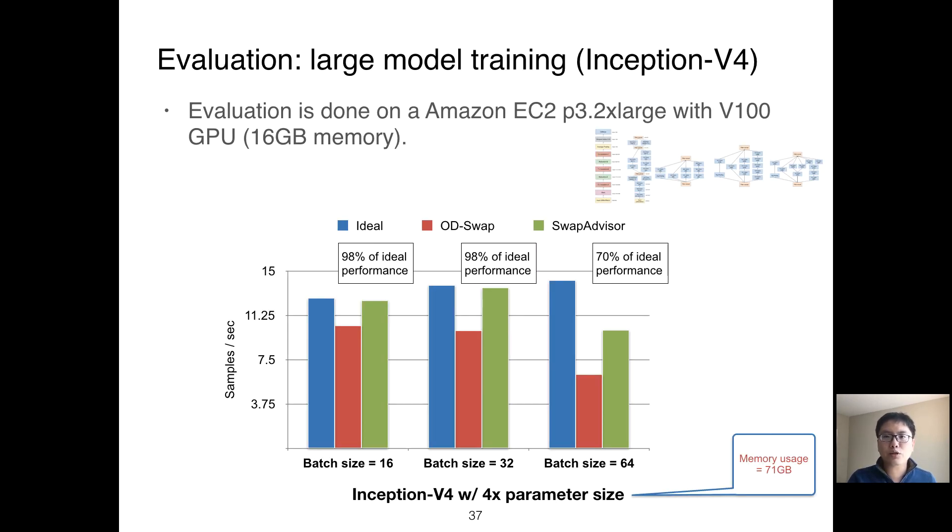The final evaluation is to train with large Inception v4. We increase the parameter size by four times. Inception v4 has several branches in the dataflow graph. More importantly, it has many different sizes of tensors. SwapAdvisor is able to achieve almost perfect performance when batch size is 16 and 32, and can achieve 70% of ideal performance for batch size 64.